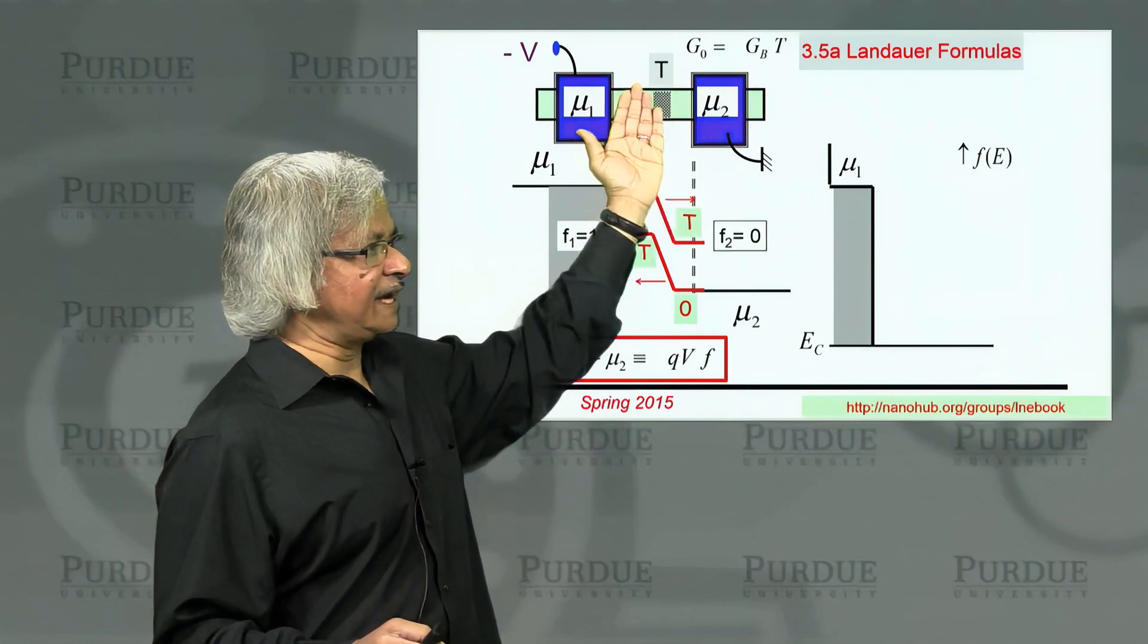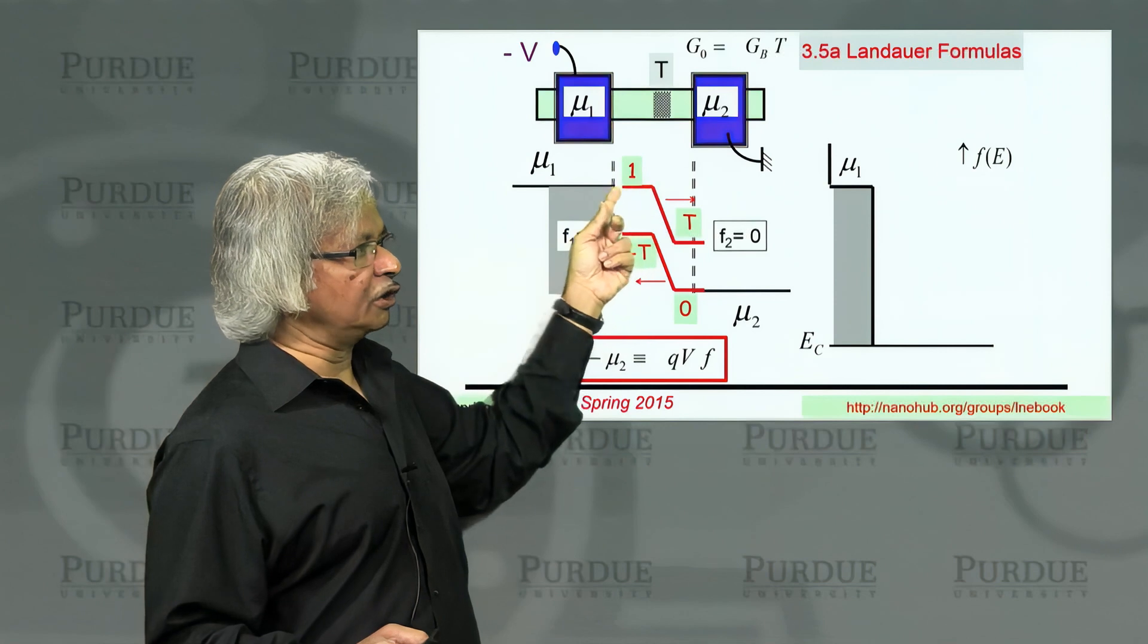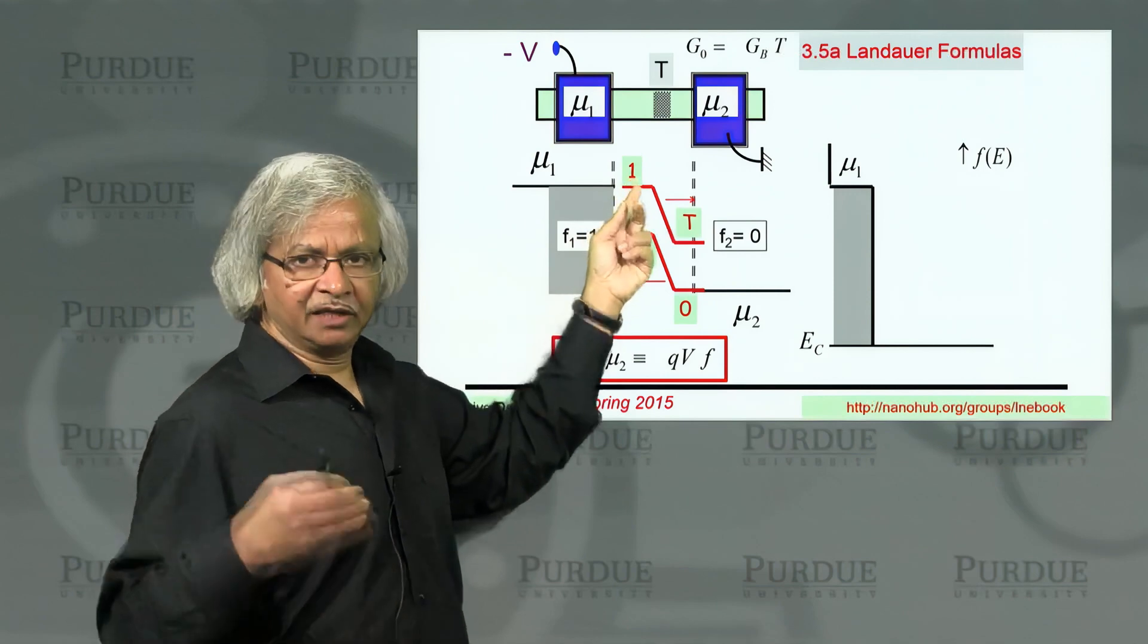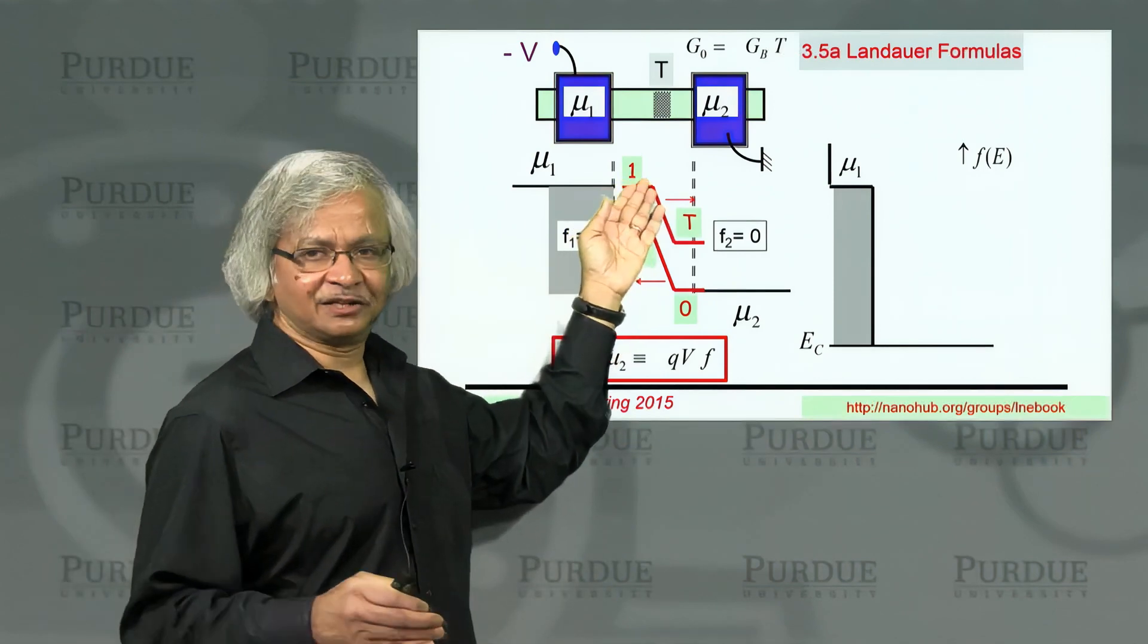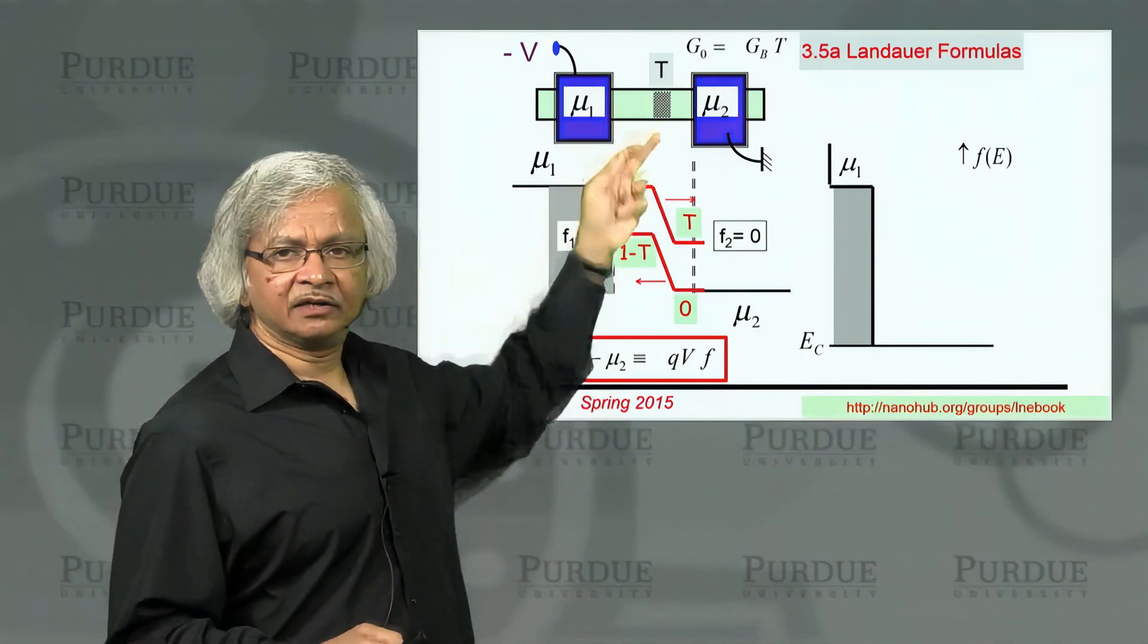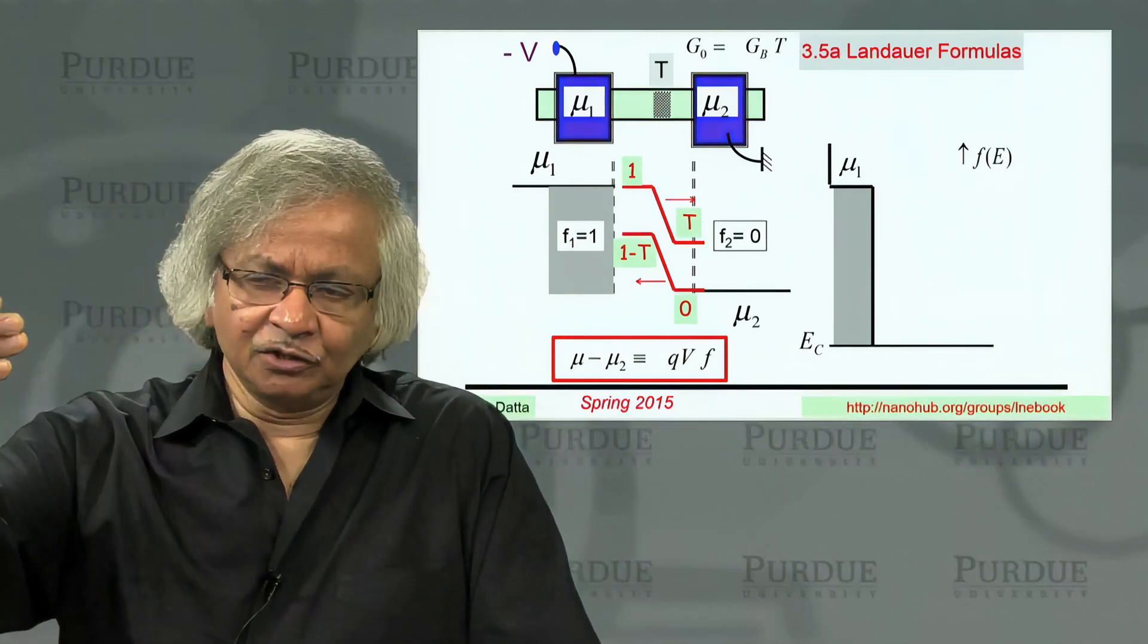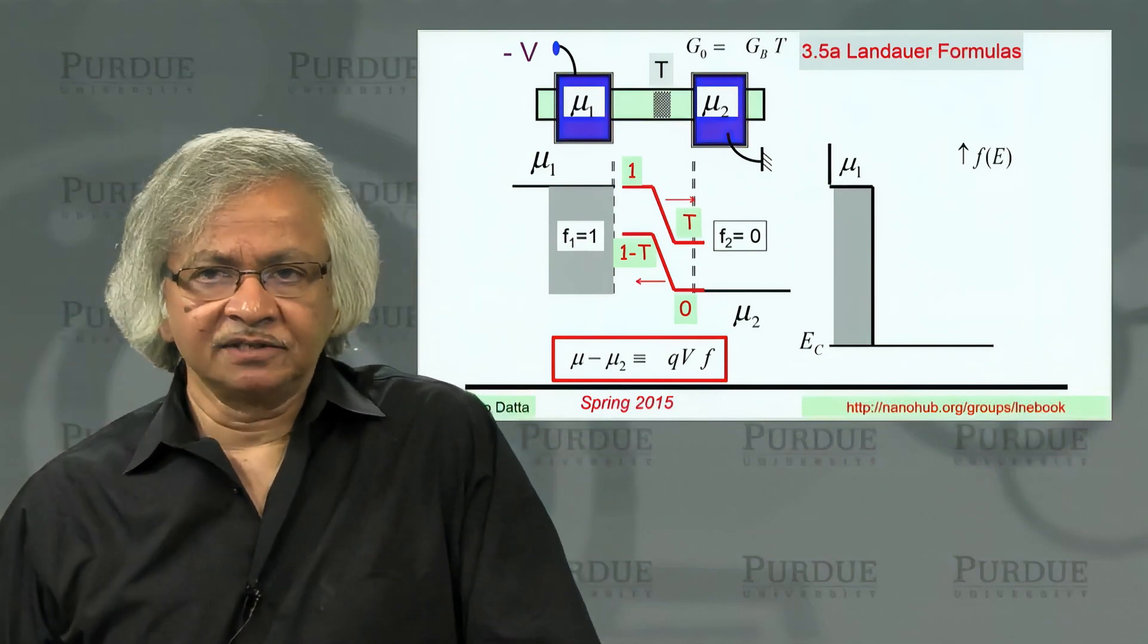The question is, what is the occupation once you cross the scatterer? Once you are on this side, the right moving states are all occupied. In terms of the highway analogy, all the northbound states are completely filled. But what happens as you cross the scatterer? Any time there is a construction zone or toll booth, as you go across, the occupation drops suddenly.